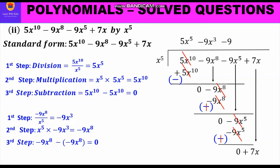We bring down 7x. The power of x here is 1, which is less than the power of x in the divisor, x⁵. So we stop the division. The remainder is 7x and the quotient is 5x⁵ minus 9x³ minus 9.